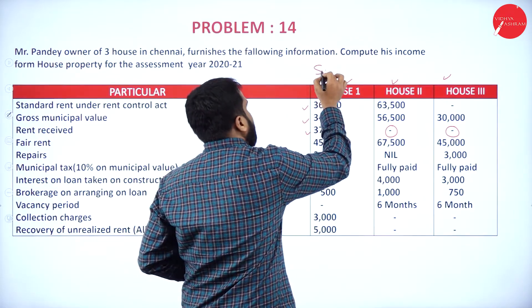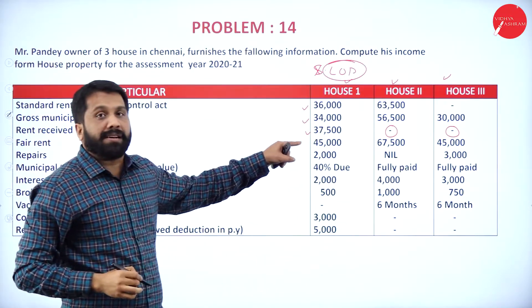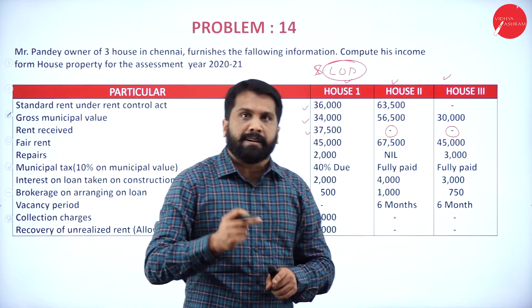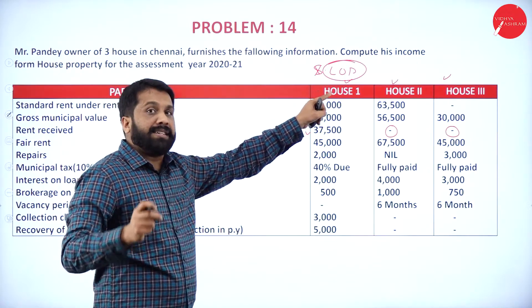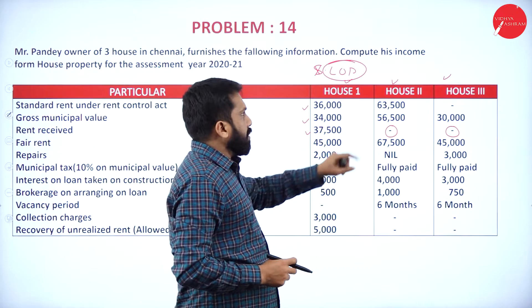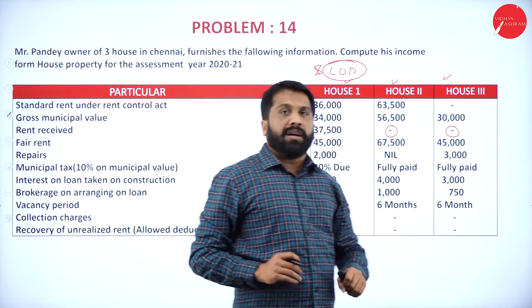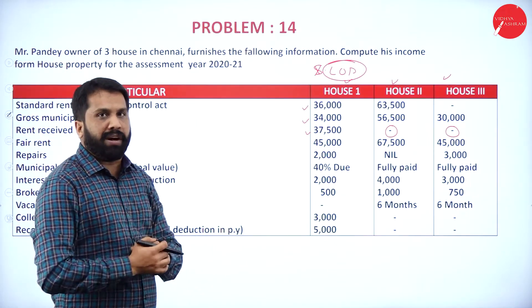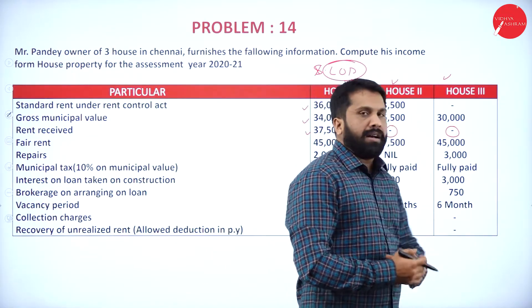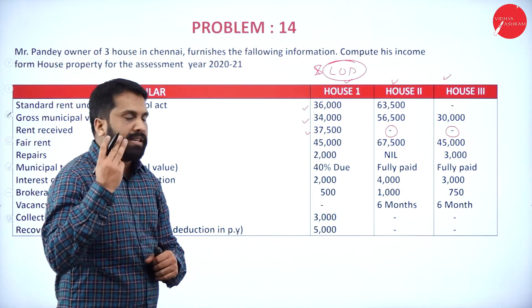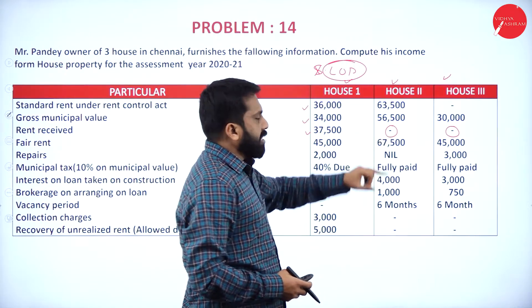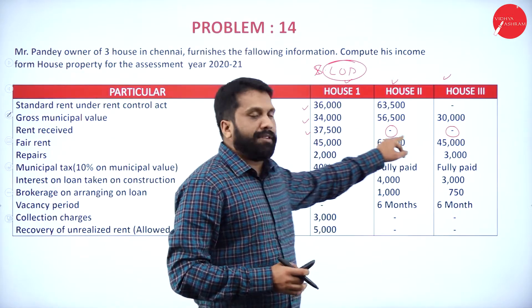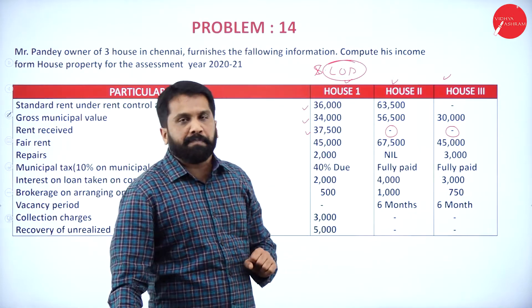House 1 has actual rent received of 37,500, so it will be a let out property — when actual rent is received, it means you have given it for rent. House 2 and House 3 have no actual rent given, so out of these two houses, one must be considered as self-occupied to reduce your tax liability.